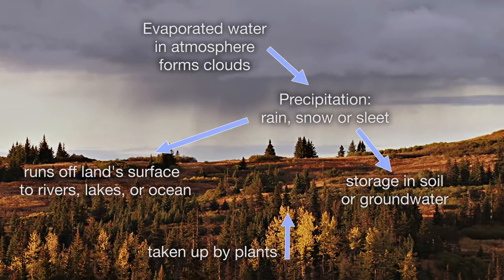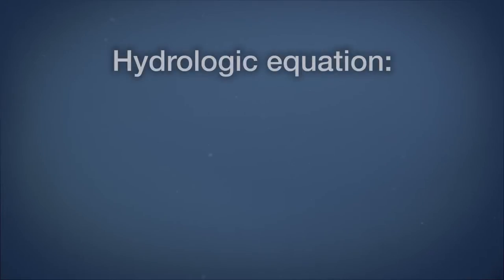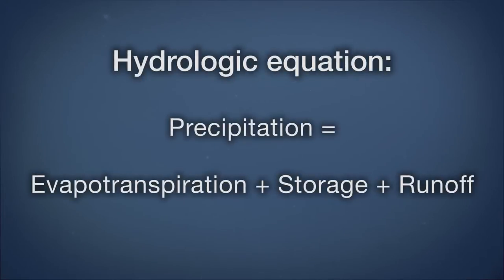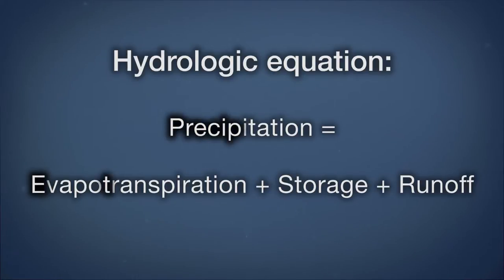We can describe these events through the hydrologic equation: precipitation equals evapotranspiration plus storage plus runoff — or Precip = ET + S + RO.